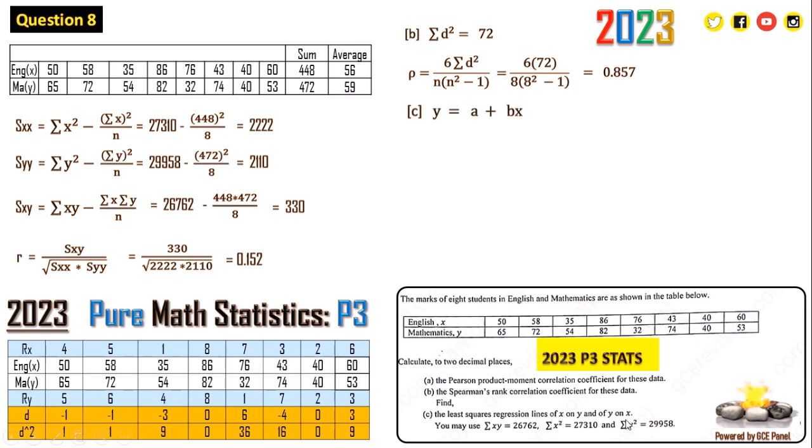Now part c wants us to find the least squares regression lines of x on y and y on x. We need the value of b. The equation is modeled by y equals a plus bx where b is equal to the product moment correlation coefficient times the square root of Syy over Sxx. So our b will be equal to 2110 over 2222, that gives us 0.15. Then a is equal to y bar minus b times x bar. For x bar we have 56 and y bar is 59. So 59 minus 0.15 times 56 gives us 50.6. Therefore y equals 50.6 plus 0.15x.